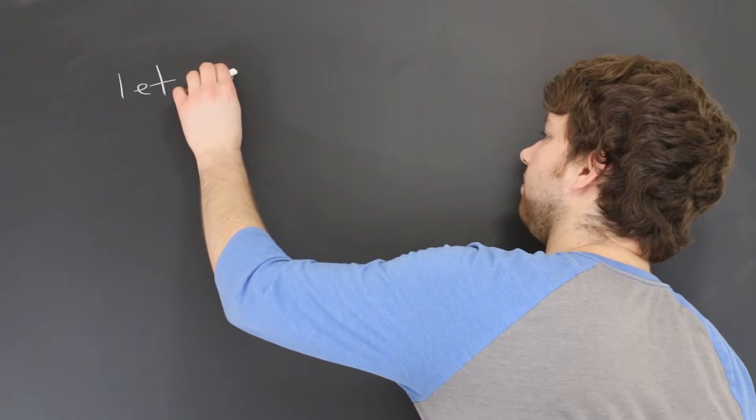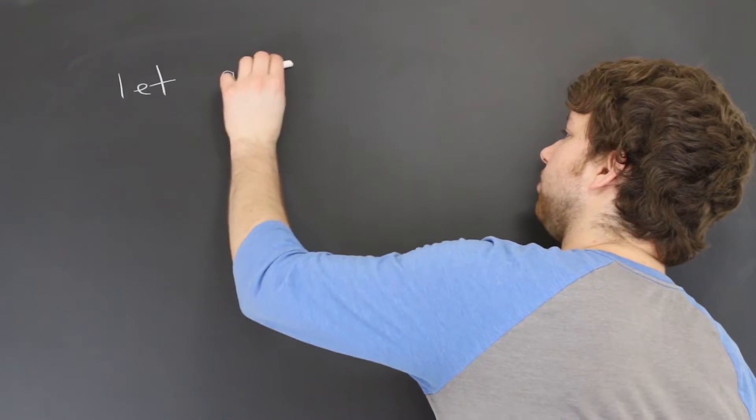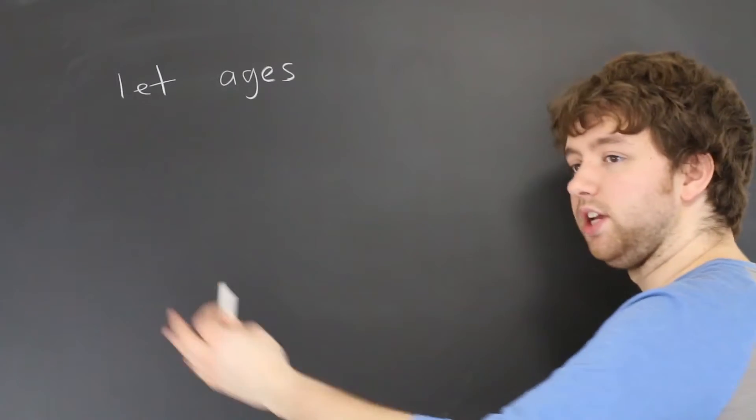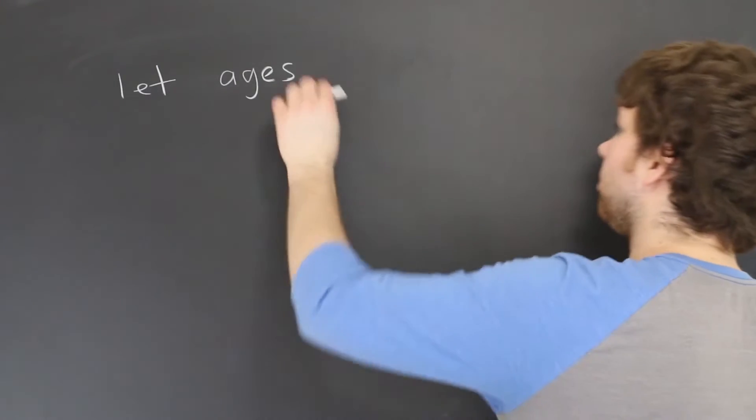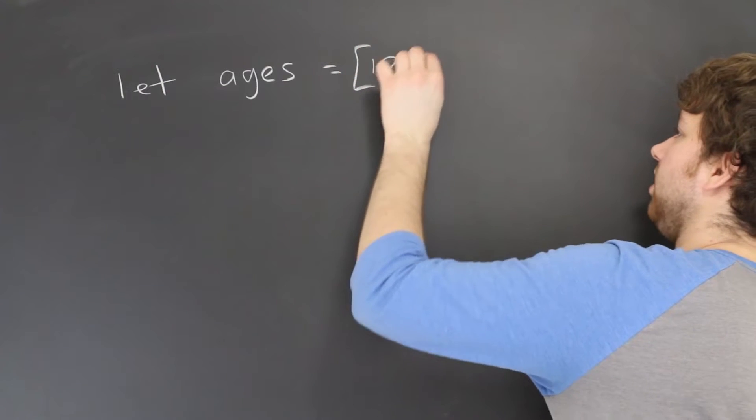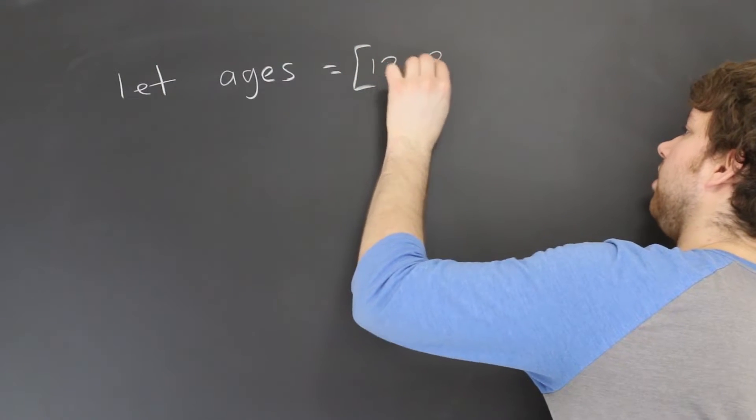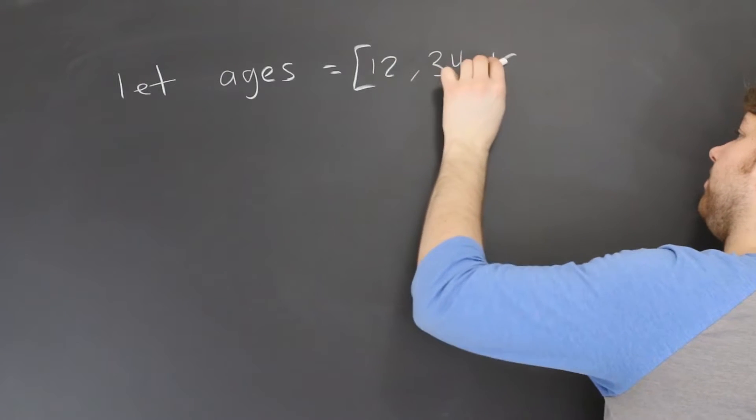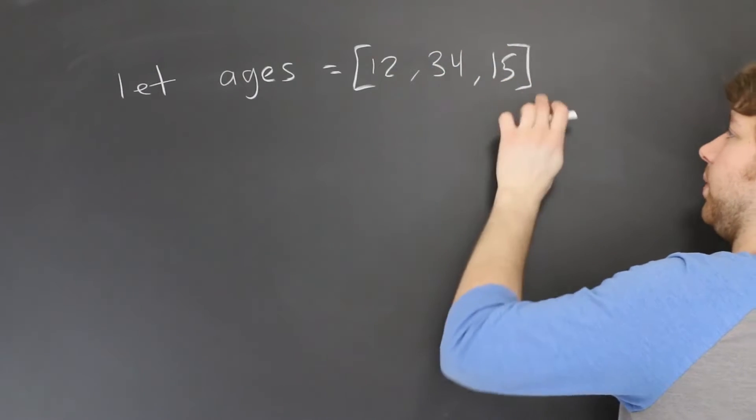So for example we could have ages, so every element is an age. Then you create the array with square brackets and put the items in here. We could say 12, 34, 15, whatever we wanted to put. Then we close it with the square bracket and put the semicolon.